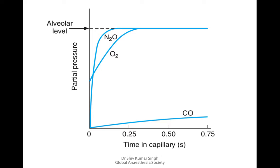This graph shows the transit time for carbon dioxide, oxygen, and nitrous oxide in a pulmonary capillary. The usual transit time is 0.75 seconds. Nitrous oxide, because it is less soluble in blood, equilibrates very quickly — in less than 0.25 seconds. Oxygen equilibrates within 0.25 seconds. Whereas carbon monoxide, which is highly soluble, does not equilibrate as quickly. Carbon monoxide is used for measuring diffusion across the lungs — the diffusion capacity TLCO.